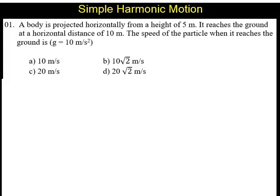Question number 1. A body is projected horizontally from a height of 5 meters. It reaches the ground at a horizontal distance of 10 meters. The speed of the particle when it reaches the ground is?